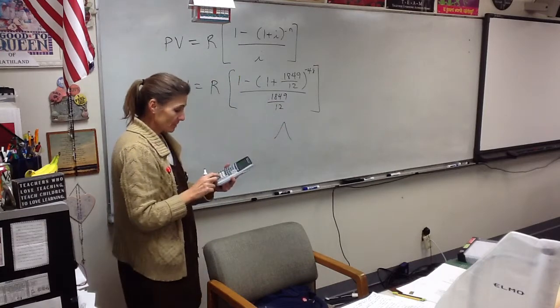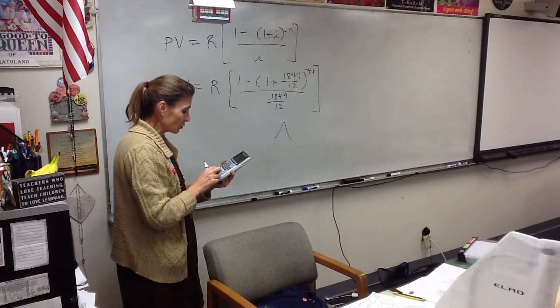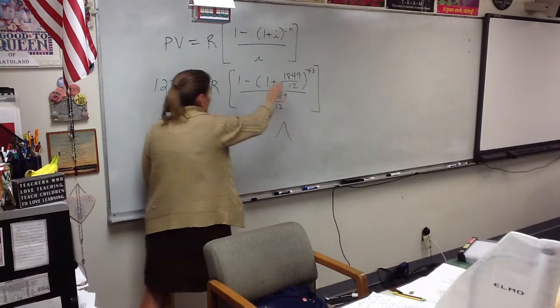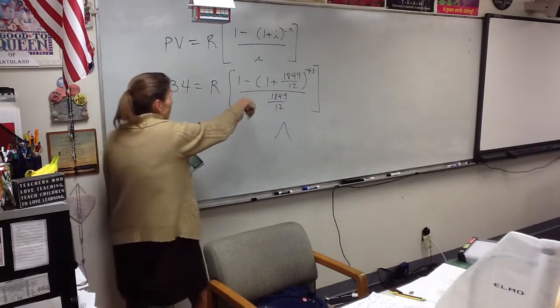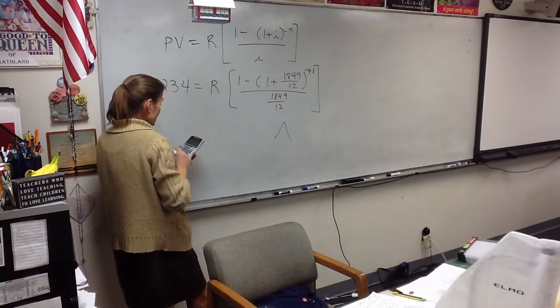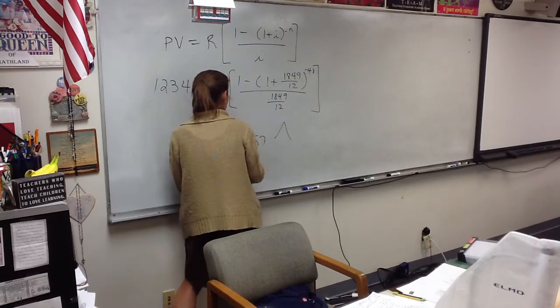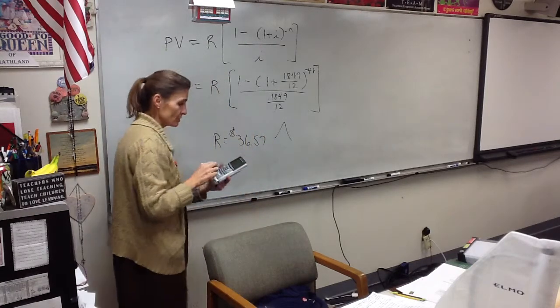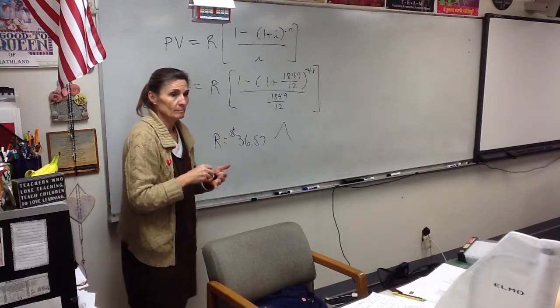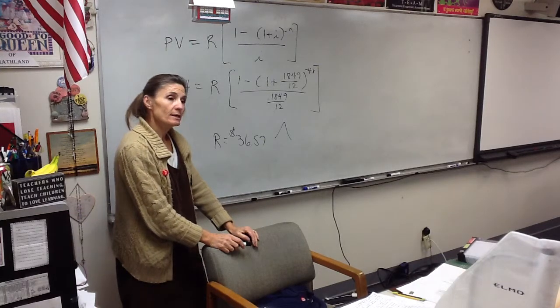Then hit divided by, parentheses, 0.1849 divided by 12. And then we're going to take, that's all of this now. So, I'll take 1,234 divided by that answer. And it's 36.57. That's $36.57.